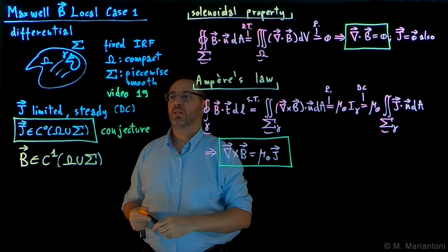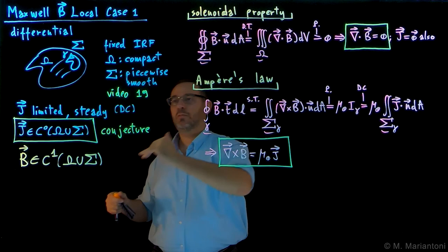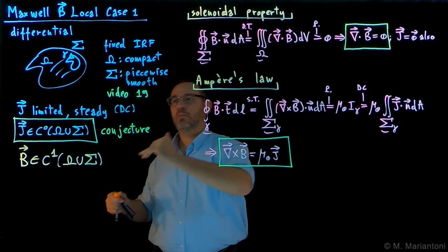And then eventually we need to study case 2, which is what is coming up in the next video. So to summarize, here we wrote down case 1, so case 1 is what I call the differential form for the magnetostatic field Maxwell's equations, solenoidal property, divergence of B is equal to 0, and Ampere's law, which is the curl of B equal mu naught J, only in the case of DC current, with this conjecture in mind. That's it!